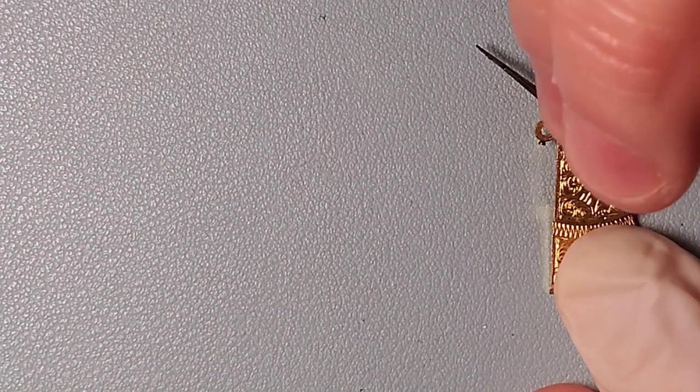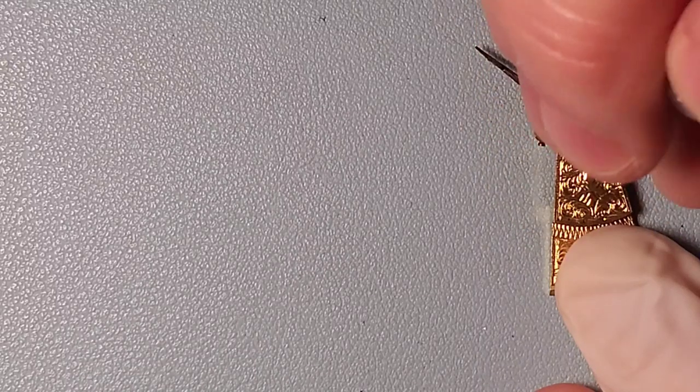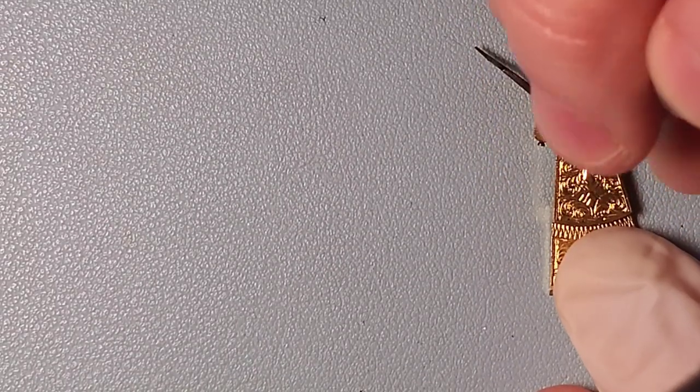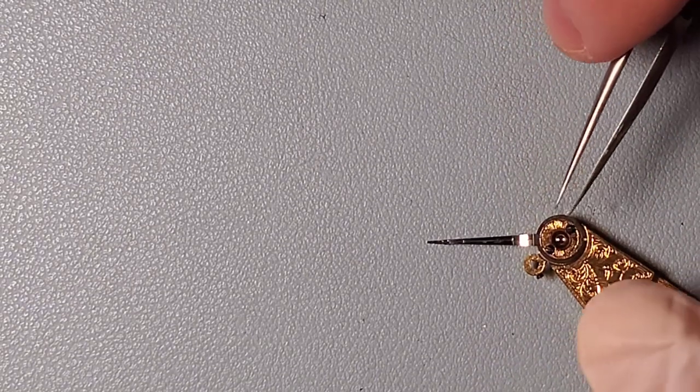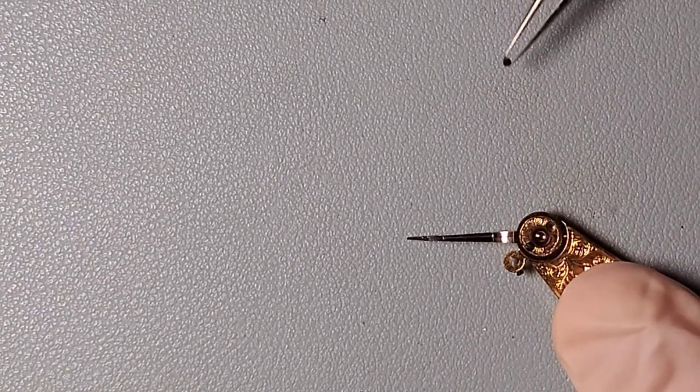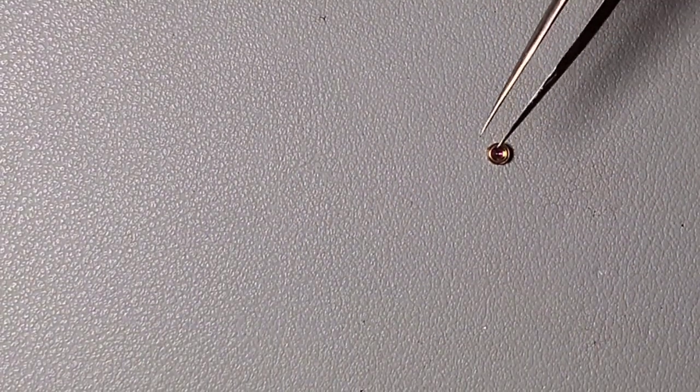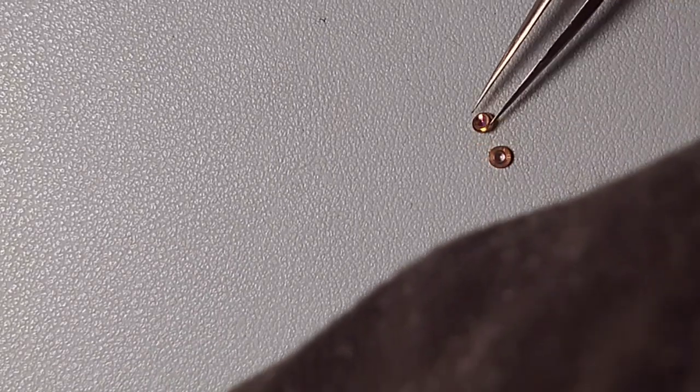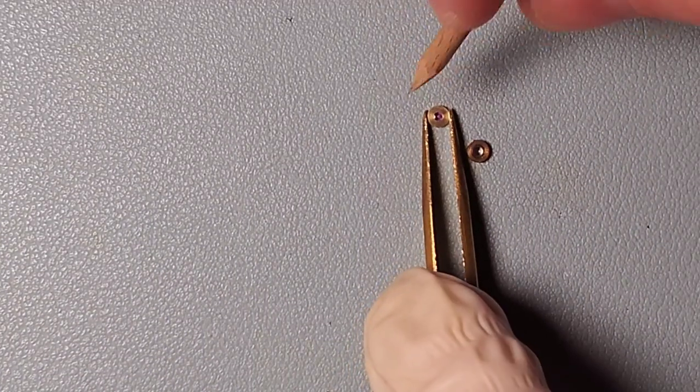Here I'm removing the top jewels from the balance cock in preparation for cleaning and oiling them. Now pocket watches of this era, the jewels were held in place by a couple screws and once those are removed I punch out the jewels. There's two of them, there's a cap jewel and a hole jewel and I'll go ahead and clean those jewels.